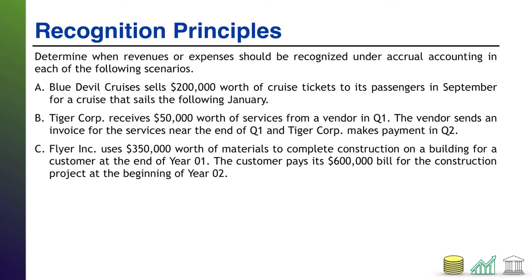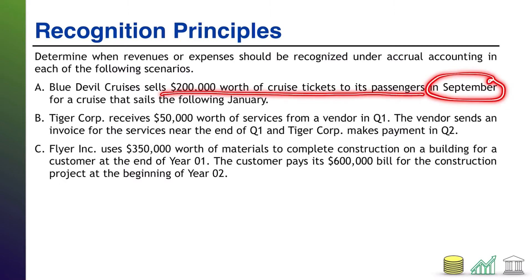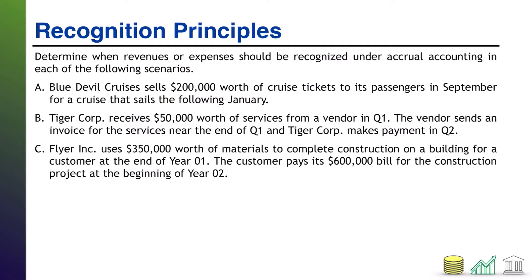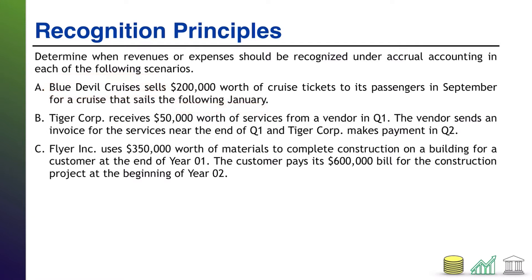Remember, revenues are recorded under accrual accounting when they are earned, regardless of when cash changes hands. In September, the cruise line has sold the tickets to the passengers — in other words, it has collected the cash and given the passengers the tickets. However, the cruise line has not actually earned that money until it actually takes the passengers on the cruise. Therefore, January is when we will recognize revenue in this scenario.